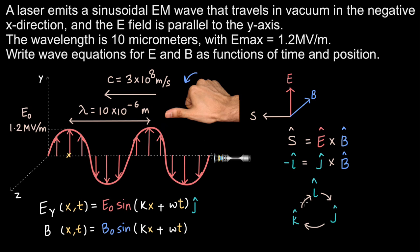We can use the cyclic cross product diagram: moving clockwise from i to j to k, i × j = k, j × k = i, k × i = j. Since we need −i cap as the result, the magnetic field must be in the negative k or negative z direction — pointing away from the plane of the screen.